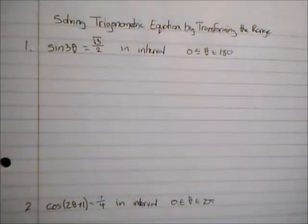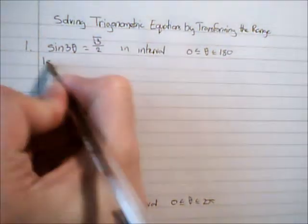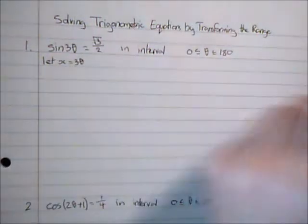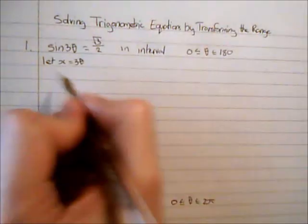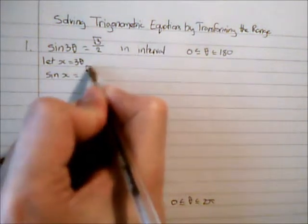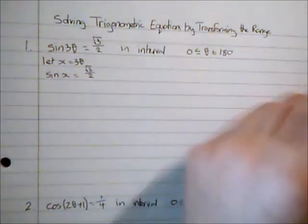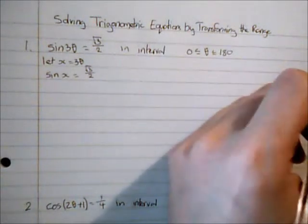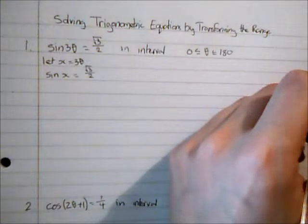The way I'm going to deal with this is using a substitution. I'm going to say x equals three theta, so I'm now going to solve sine of x equals root three over two. This is something that I'm familiar with doing from the work we've done already.